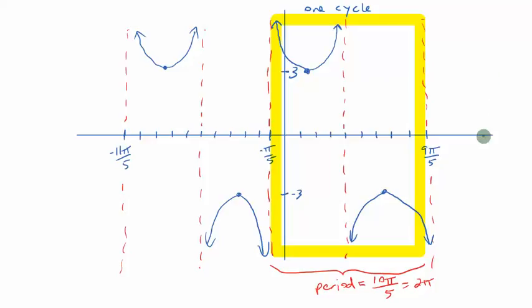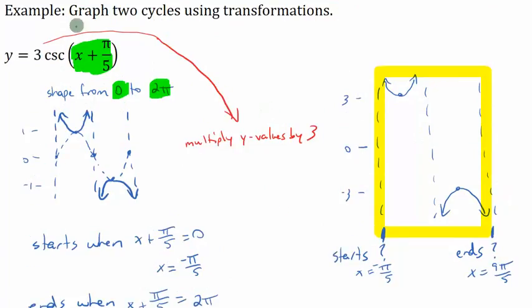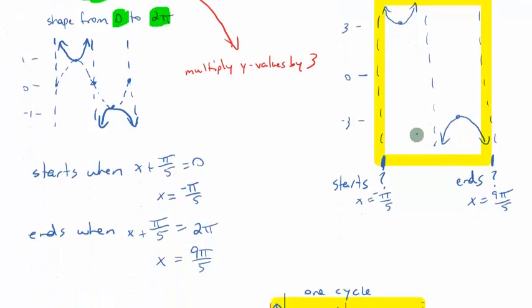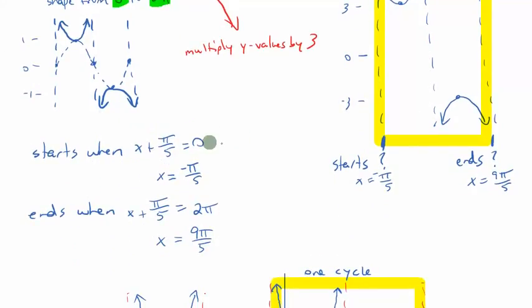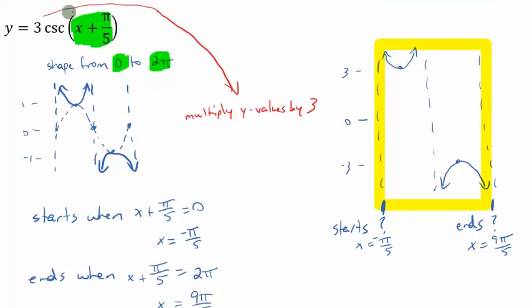There's an example of graphing a transformed cosecant function using your sine to get your shape, reciprocal of the sine function to get your shape, which I've got here in the yellow box, and then determining where on the x-axis the shape starts and ends by setting your angle that you're given, whatever you're taking the cosecant of, setting equal to 0 and solving for x, and setting it equal to 2π and solving for x.